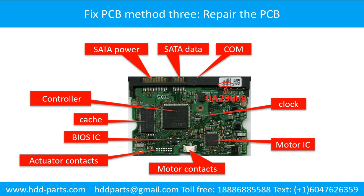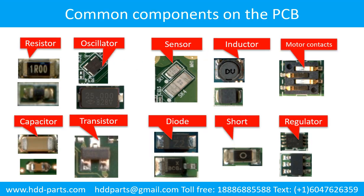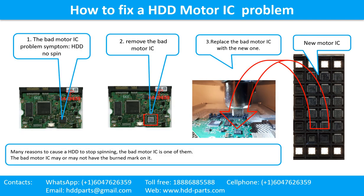PCB repair method: repair the printed circuit board. This picture shows the basic components and their functions on the hard drive printed circuit board, and another picture shows some regular components on the PCB. To fix a hard drive motor IC problem — the symptom is that the hard drive does not spin. There are many reasons a hard drive stops spinning; a bad motor IC is one of them. The bad motor IC may or may not have a burned mark on it. Remove the bad motor IC and replace it with a new one.